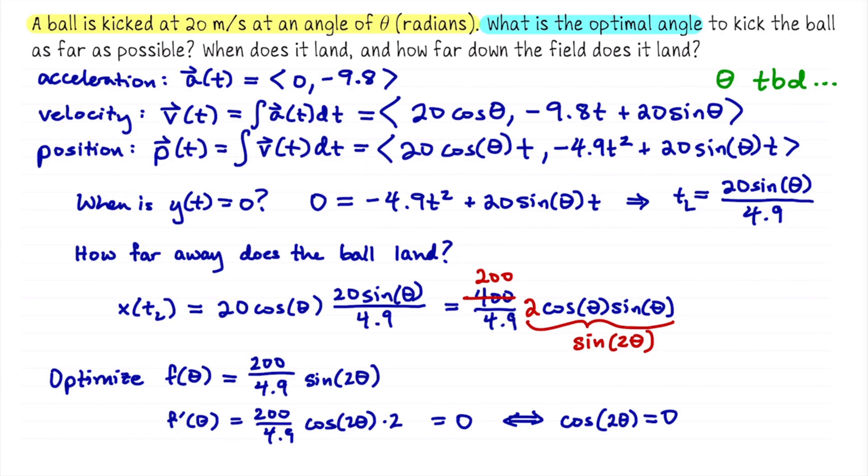However, theta equal 3 pi over 2, negative pi over 2, that would be like kicking the ball straight into the ground. That doesn't make any sense. So the only realistic solution here is 2theta equals pi over 2. Or in other words, theta is pi over 4.